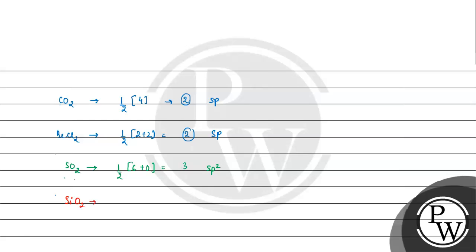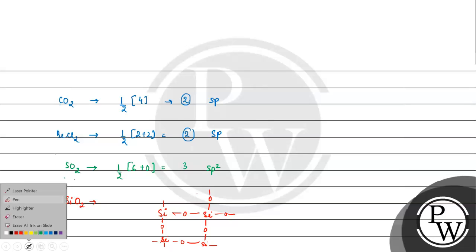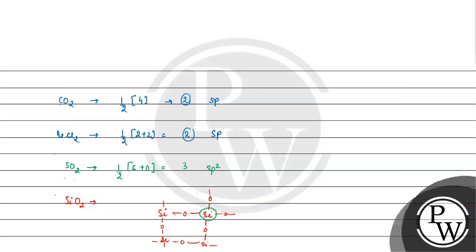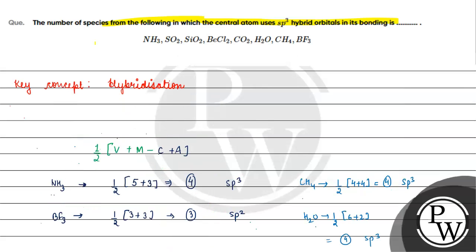Finally, SiO2. SiO2 has a 3-dimensional structure. Silicon is the central atom. In this structure, silicon is bonded to 4 oxygen atoms acting as bridging atoms. So we write half of (4 + 4), which equals 4. That gives sp3 hybridization.